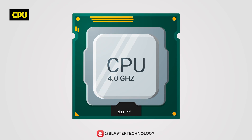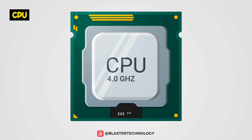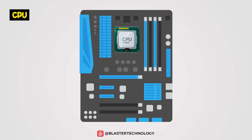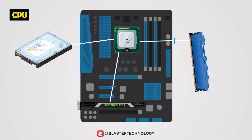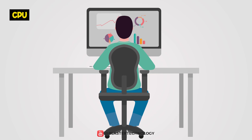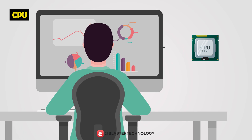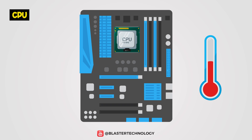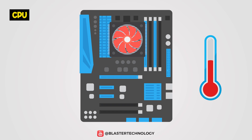The central processing unit CPU, or in short the processor, is the brain of a computer. It connects directly to the motherboard and thus communicates with all other components. The main role of the processor is to execute commands — any action performed by the user on a computer is transmitted as a command to the processor. While operating, the processor will heat up more or less depending on the task performed, so it will need a cooler.